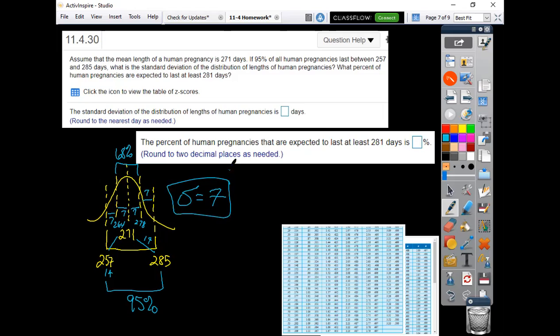Then it goes on and says, so the standard deviation comes out to 7. The percent of human pregnancies expected to last at least 281 days. So 281 is not in our chart here. If you go 281 minus our mean of 271, that means we're 10 above, right? We're 10 days beyond the mean, and then divide that by the standard deviation of 7.